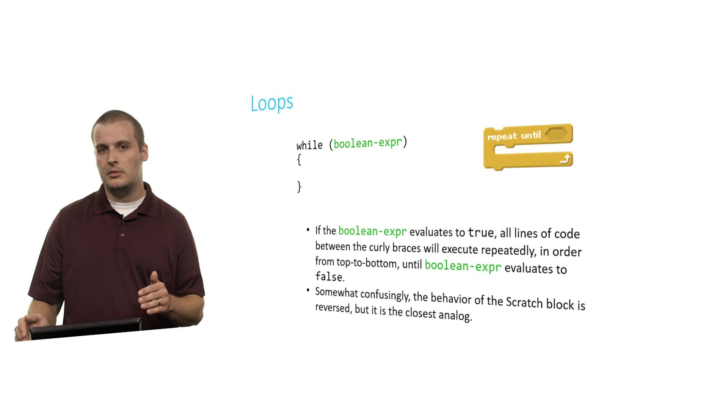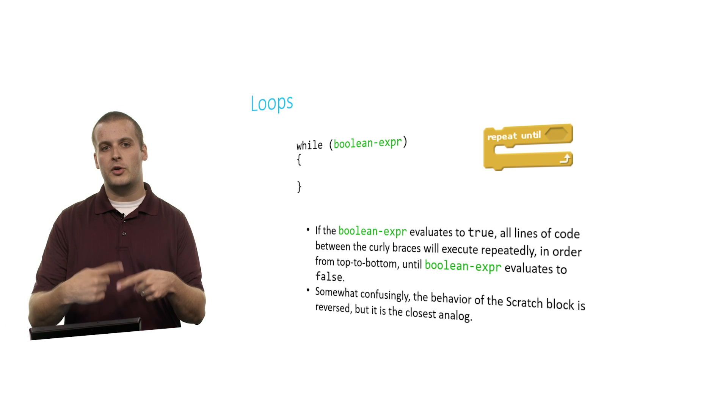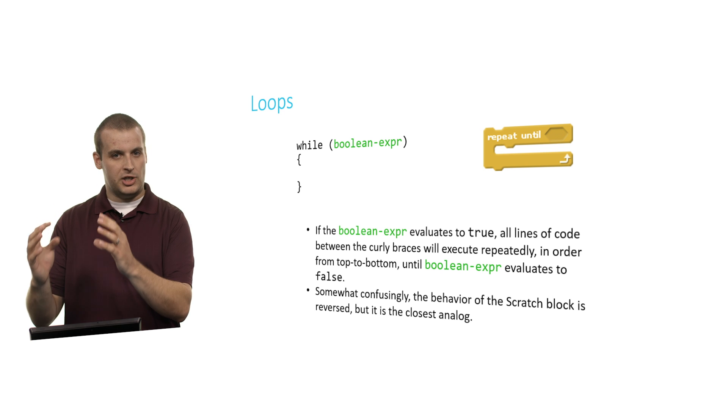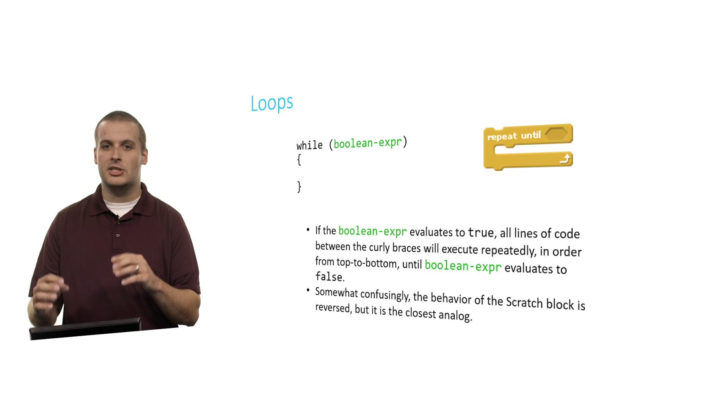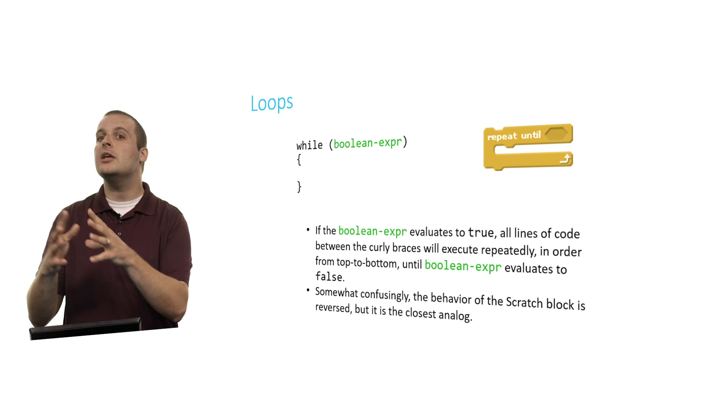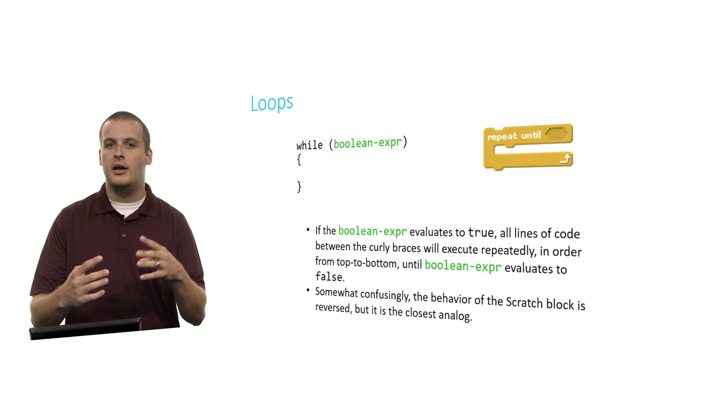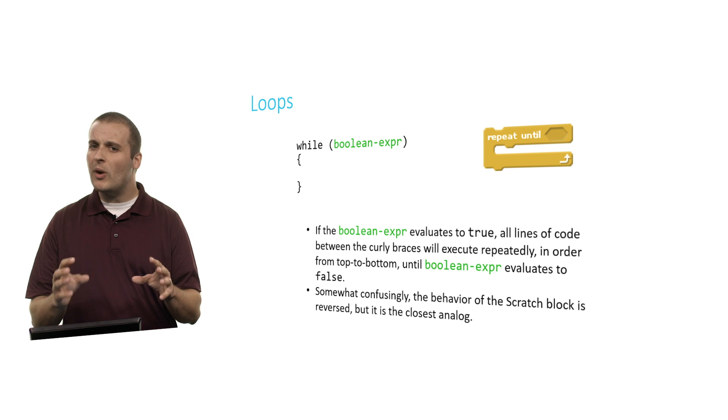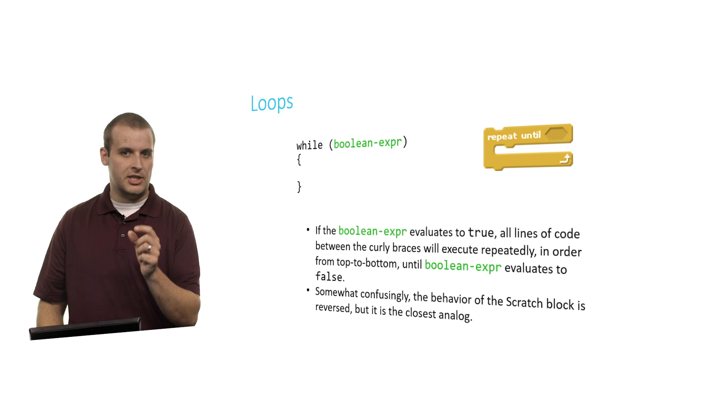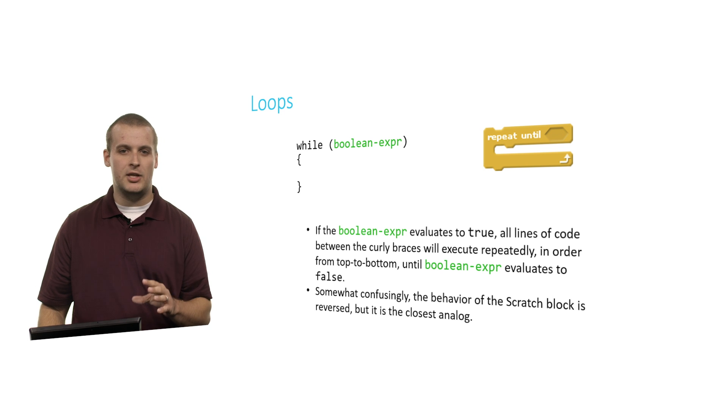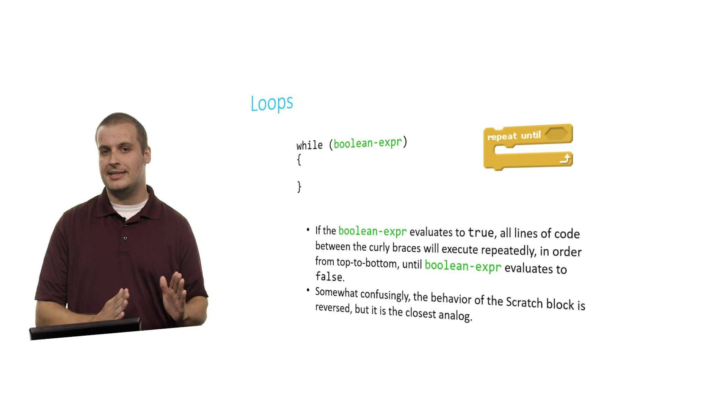Now, somewhat confusingly, the behavior of the Scratch block is reversed. So be really careful if this is your first foray into using loops. Basically, the repeat until block in Scratch will repeat something over and over and over, until the Boolean expression in the hexagon is true. So it will keep doing it until it is true. Meanwhile, the while loop will continue to do it until it is false. So they're quite similar, but there's that little distinction just to be careful of, especially as you make your first transition from Scratch into C.